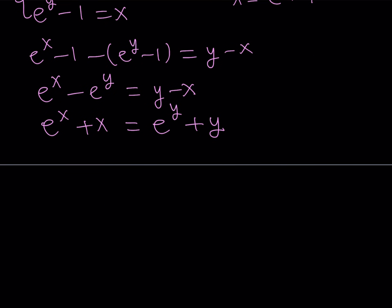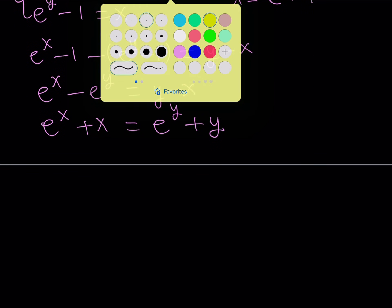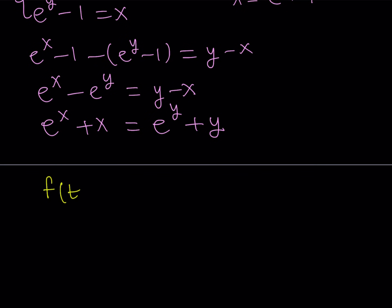Great. Now I'm going to consider the following function. And my function is going to be f of t equals e to the power t plus t. The reason why I use a different variable is because I don't want you to get confused because we have two variables here, x and y.